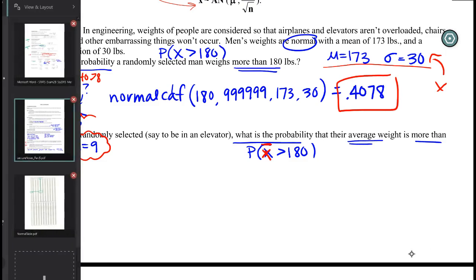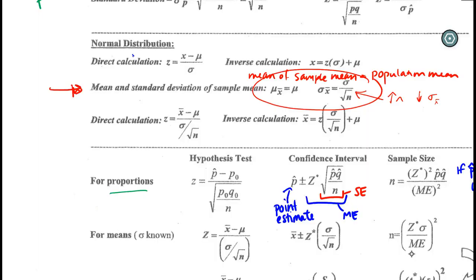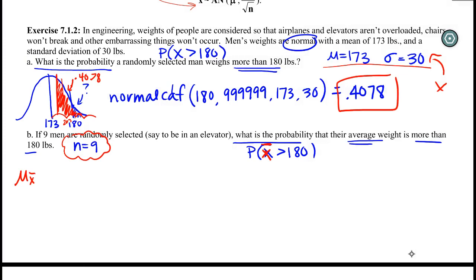So if we go to our formula sheet, we can see the mean and standard deviation of a sample mean are given here. So the mean of x bar is equal to the real mean. The standard deviation of x bar is equal to the standard deviation for the population divided by the square root of n.